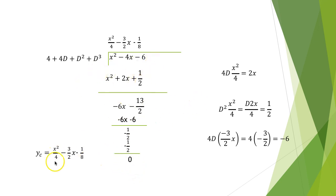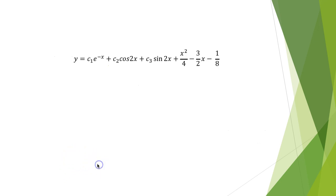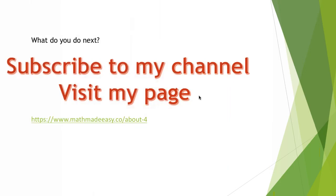So the particular integral is x²/4 − (3/2)x − 1/8. The final answer is the complementary function plus the particular integral. I hope this video was useful to you. If you need more videos of this type, subscribe to my channel or visit my page. Thank you for watching.